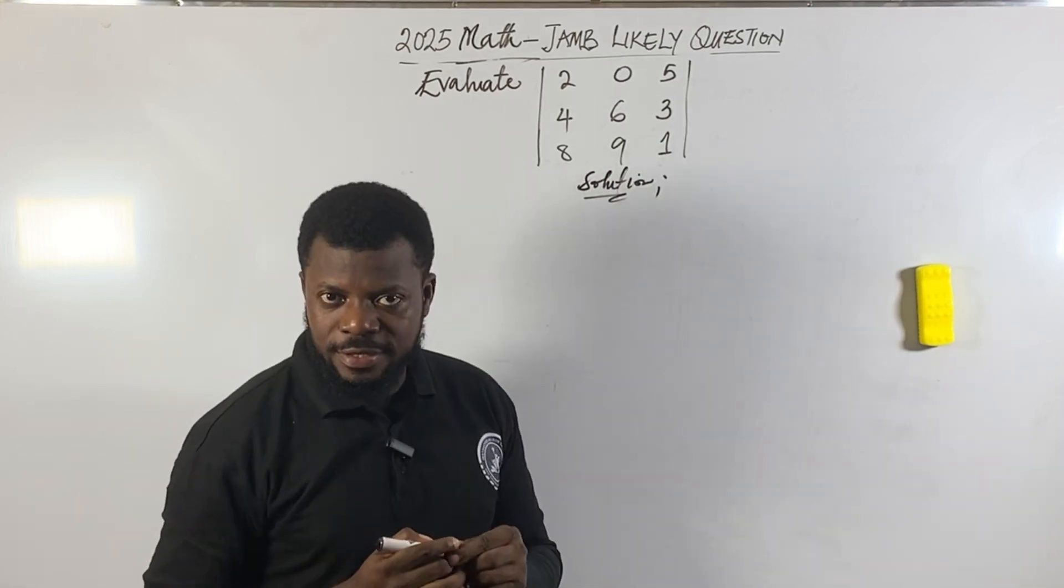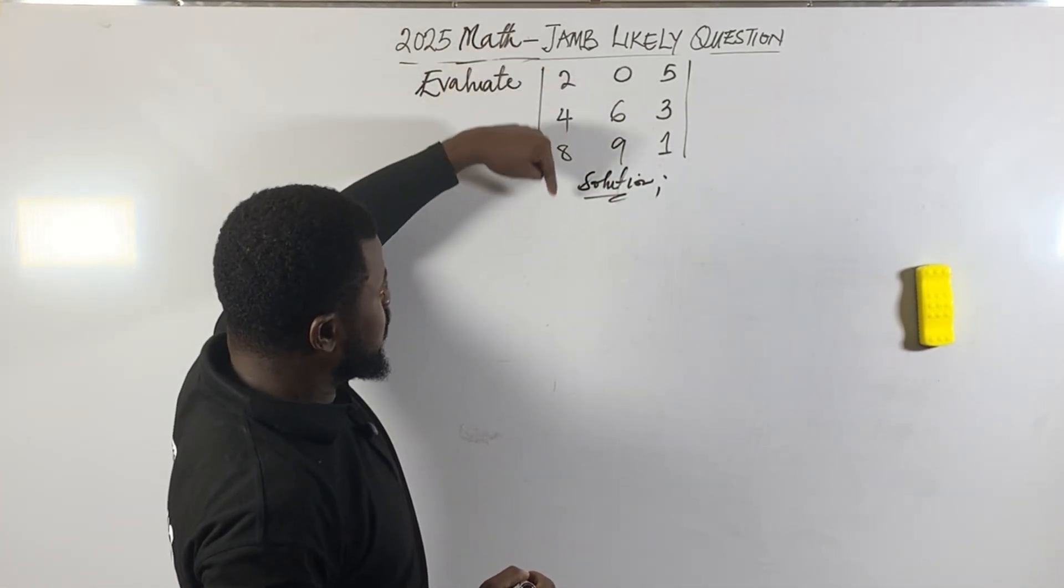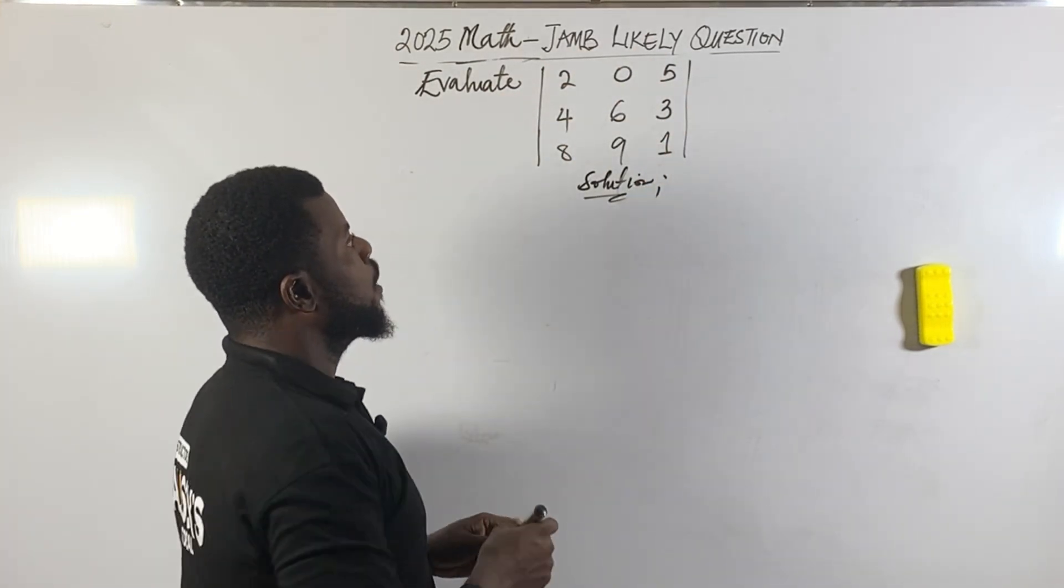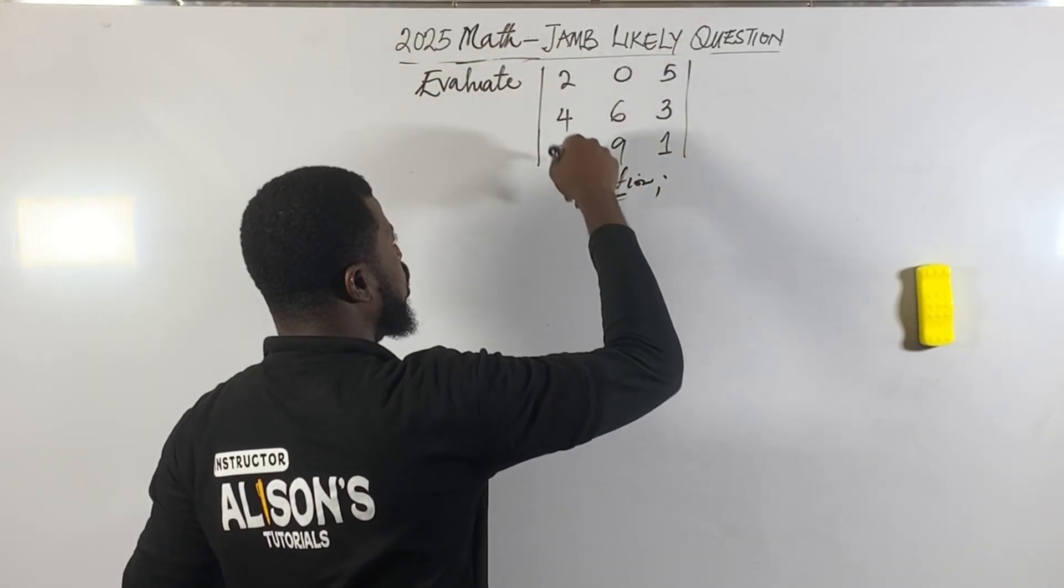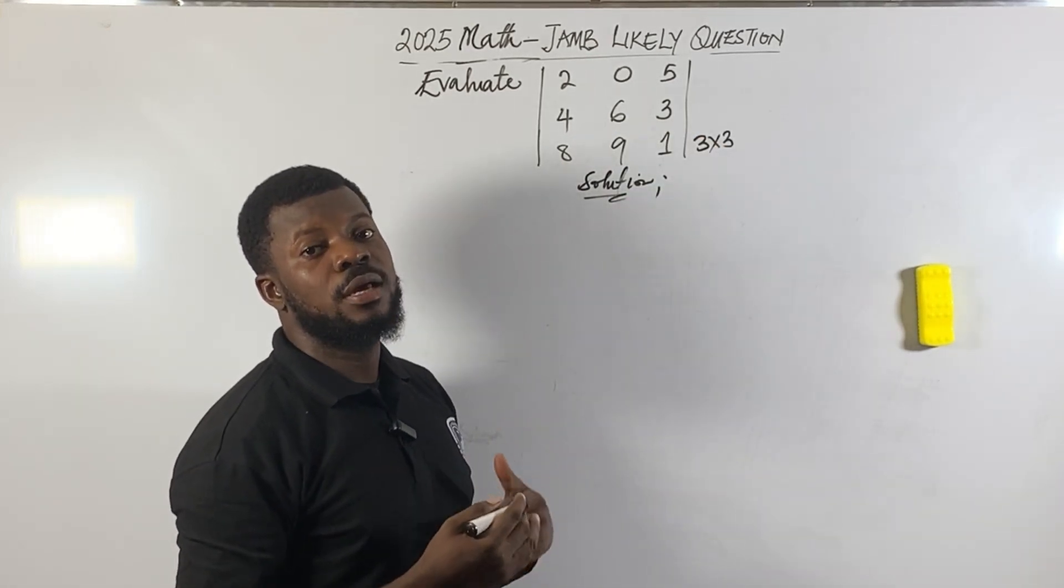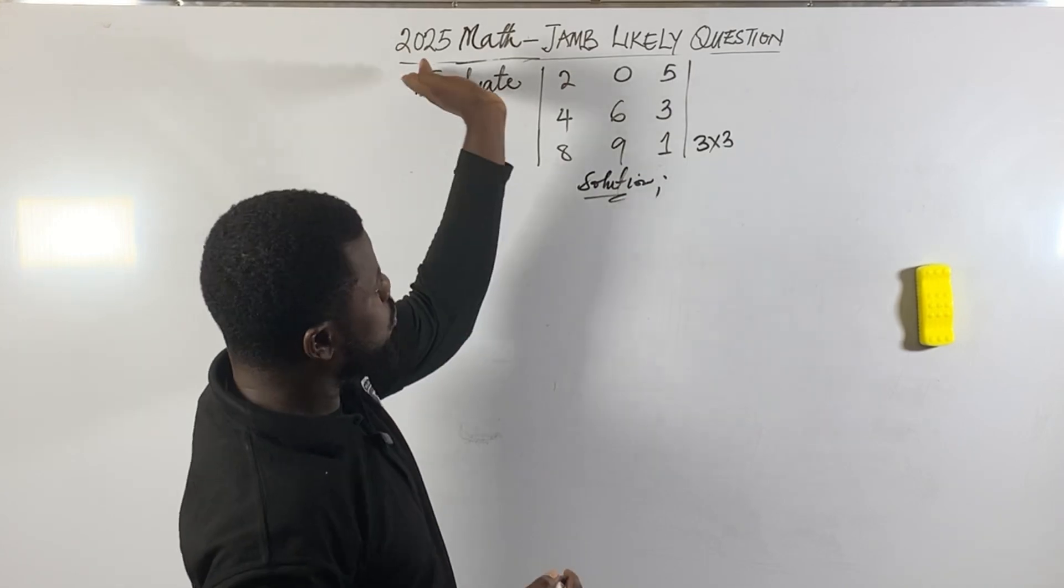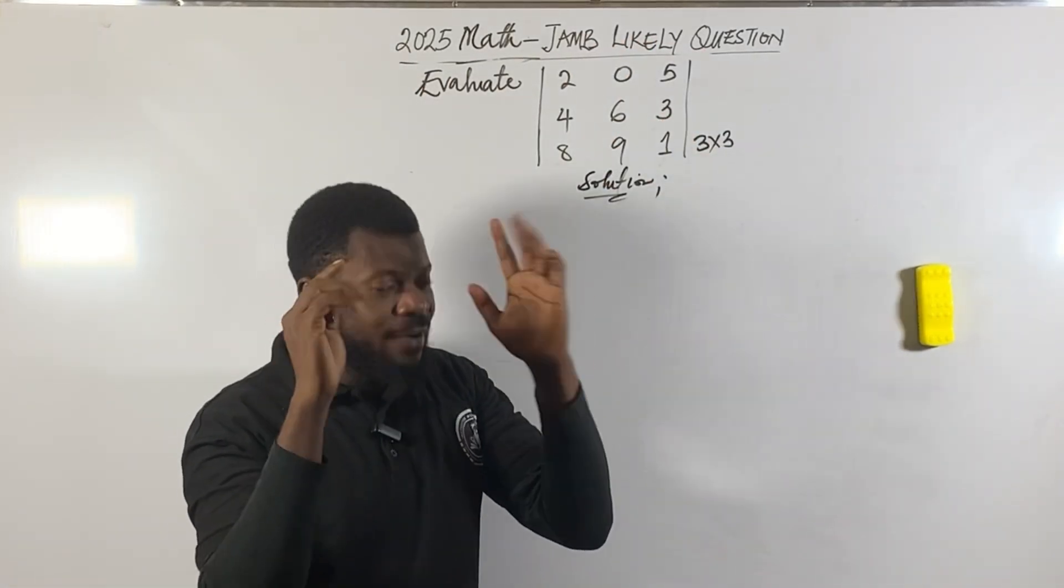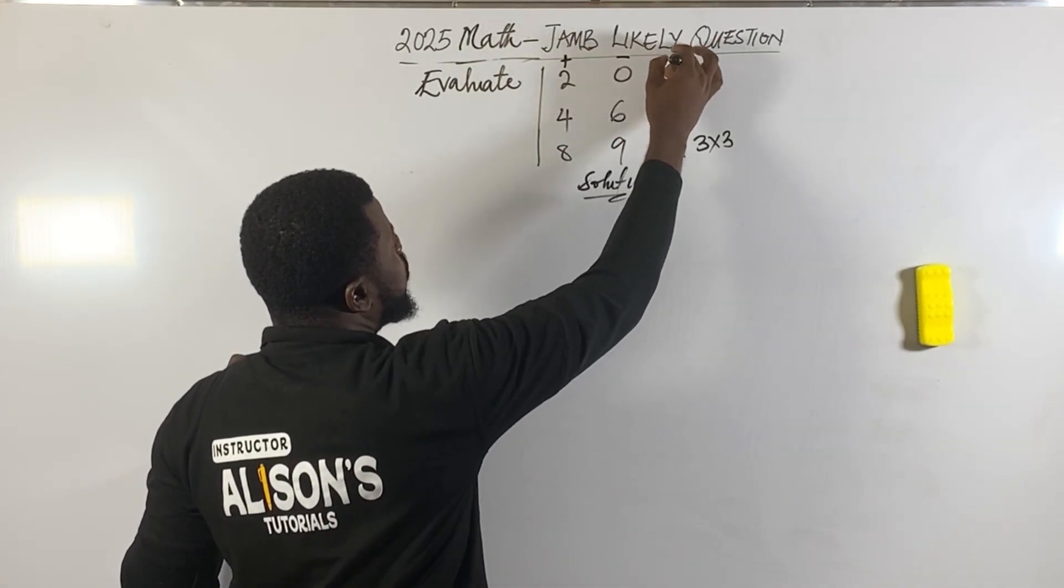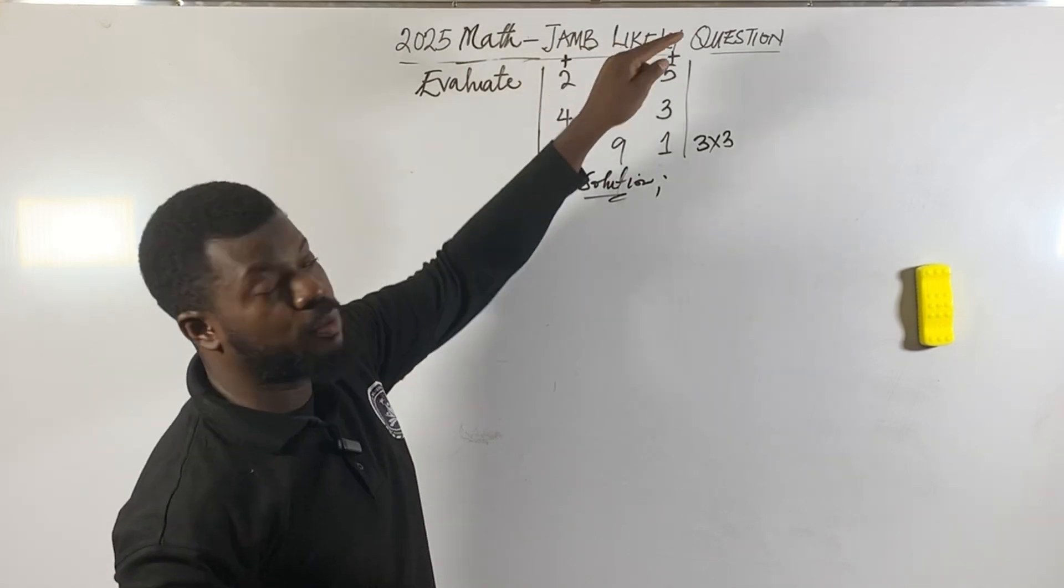Let me solve this determinant of a matrix. You see this line - these are columns: first column, second column, third column. And these are rows: first row, second row, third row. This is a 3 by 3 matrix because you get equal number of rows and columns. Now the sign pattern - see the invisible plus sign up here, then minus, then plus. This pattern will help you get the final answer.